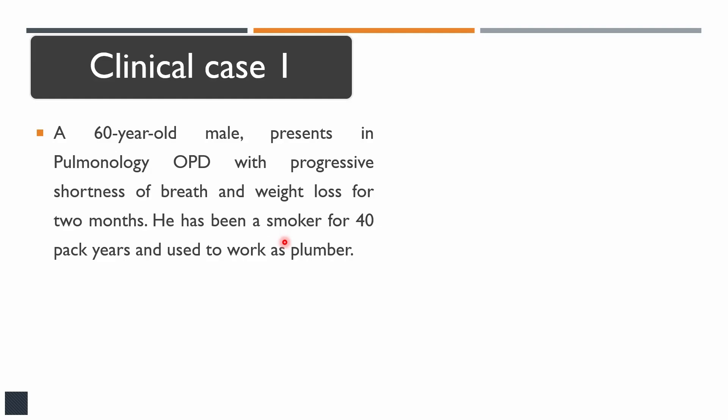This is a scenario with an elderly male presenting with shortness of breath, so the differential of shortness of breath should be in your mind. The presentation is for two months, so this is a sub-acute presentation — nothing acute in this scenario. There are some risk factors given: the patient is a smoker and also used to work as a plumber.